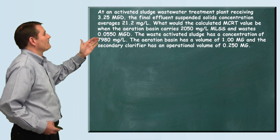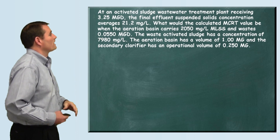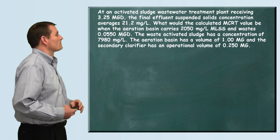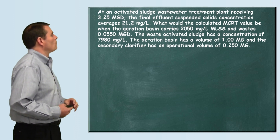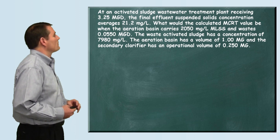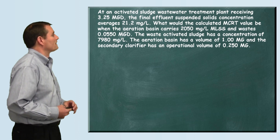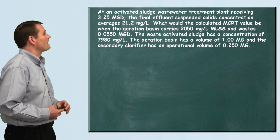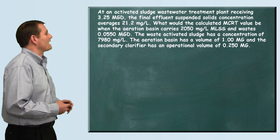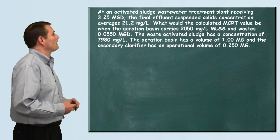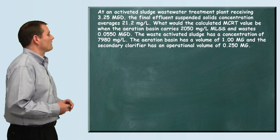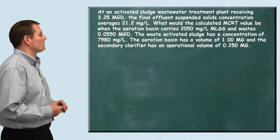The problem reads: at an activated sludge wastewater treatment plant receiving 3.25 million gallons per day, the final effluent suspended solids concentration averages 21.2 milligrams per liter. What would the calculated MCRT value be when the aeration basin carries 2,050 milligrams per liter of mixed liquor suspended solids and wastes 0.0550 million gallons per day? The waste activated sludge has a concentration of 7,980 milligrams per liter. The aeration basin has a volume of 1 million gallons, and the secondary clarifier has an operational volume of 0.250 million gallons.